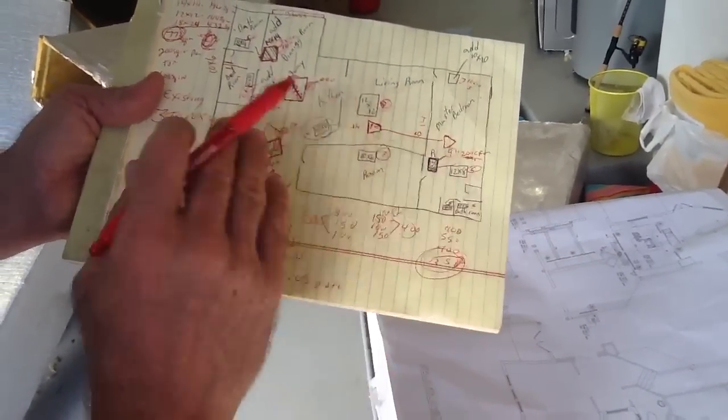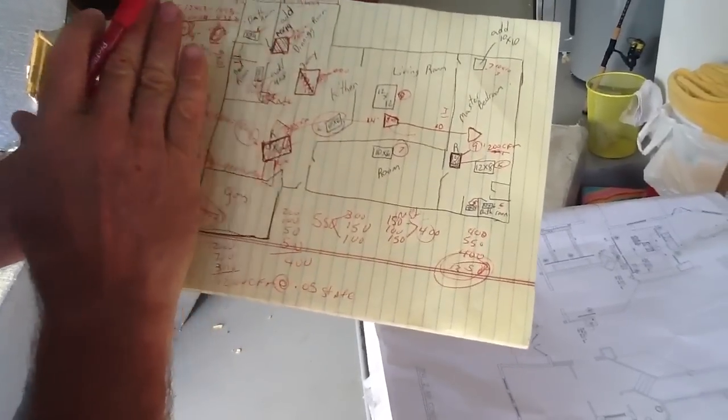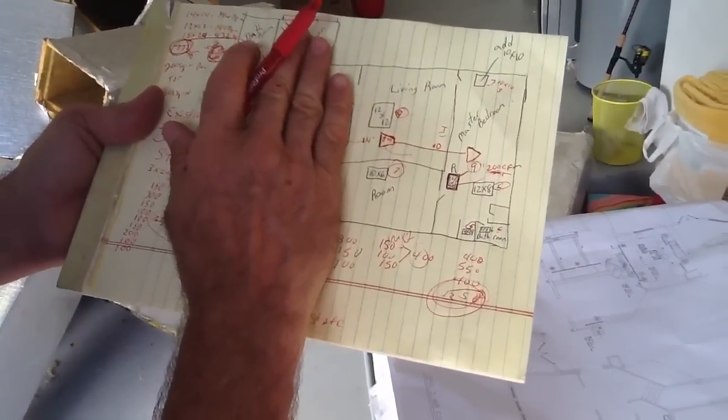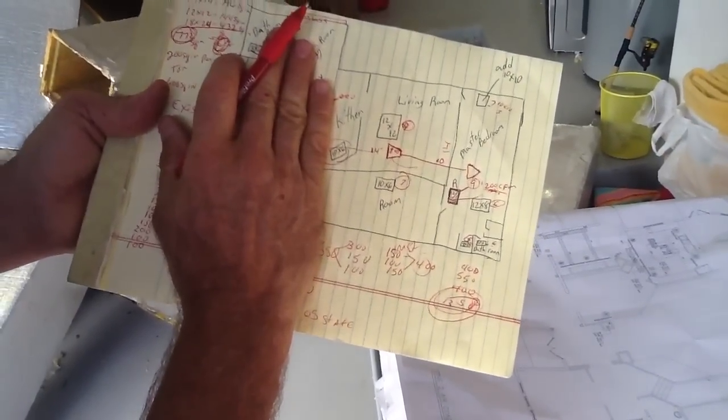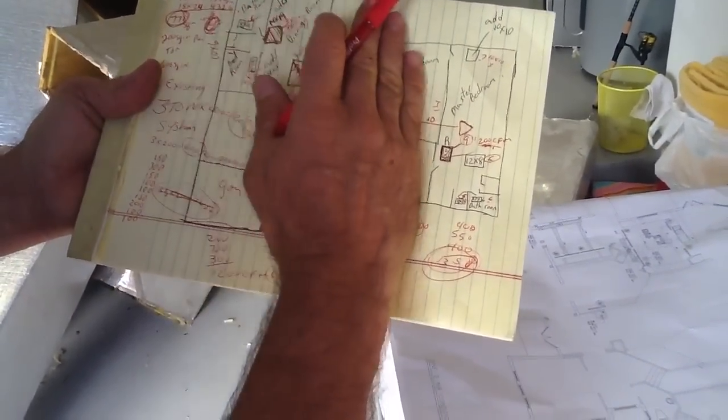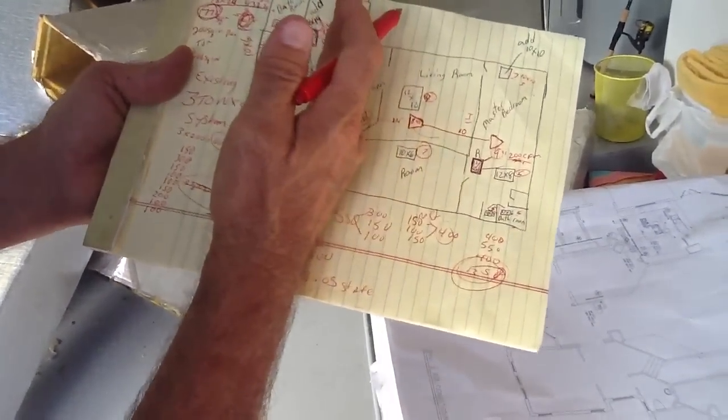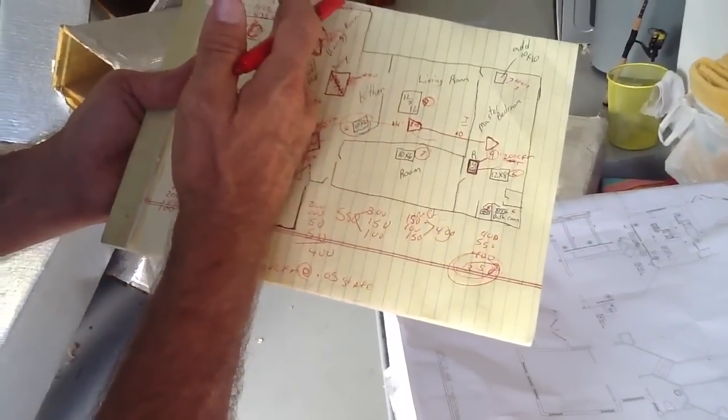So the point I want to make out to you is I have divided the house up like this. As I divide the house up, I'm going to run one flex duct system on this side and I'm going to tie one on this side.